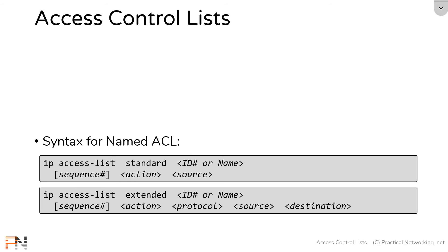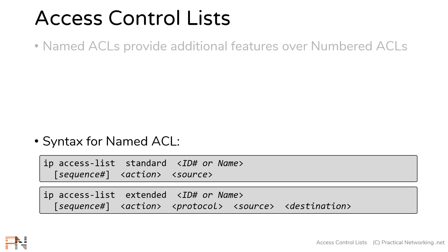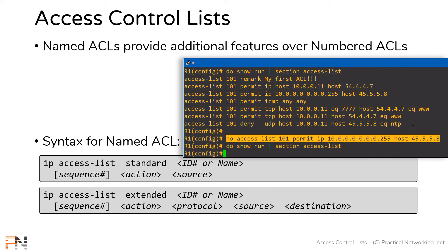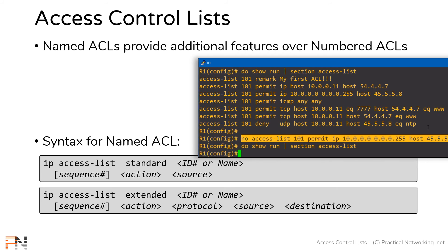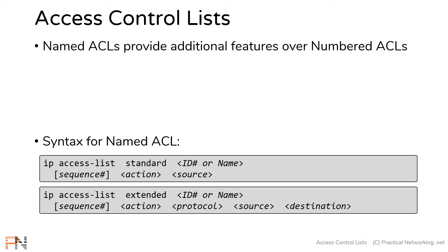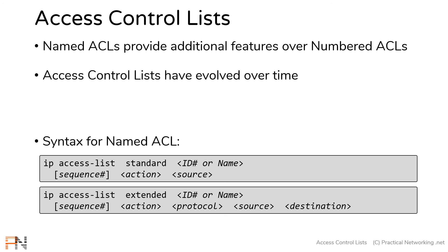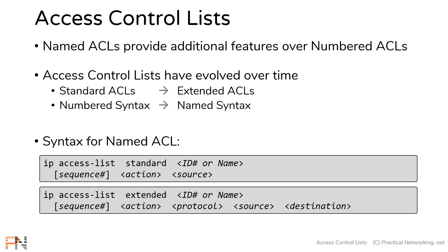That takes care of the fields in named access list syntax. You might be asking yourself: if the fields in named ACL syntax are so similar to a numbered access list, what's the point of named ACLs? Named ACL syntax provides additional features which don't exist in numbered ACLs. Remember that issue from the last video where we couldn't remove individual ACL lines from a numbered access list without blowing away the entire ACL? That problem goes away with named access lists. These tools were initially created a long time ago and have evolved as more features were added — from standard access lists filtering only on source IP, to extended access lists filtering on five fields, and then to named ACL syntax.